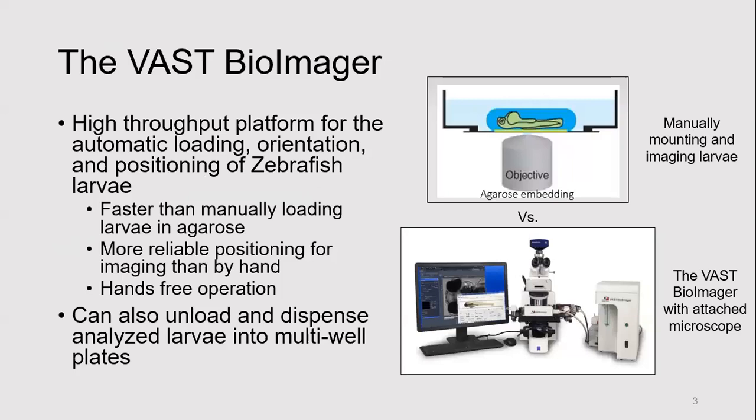Traditionally, zebrafish larva are imaged by embedding them in agarose, then manipulating the larva in the agarose to achieve a desired position. The larva is then taken to a microscope and imaged. For batch or higher throughput imaging, multiple larva are mounted, manipulated, and then imaged one after the other.